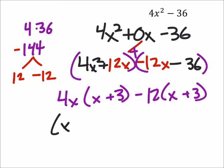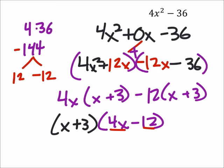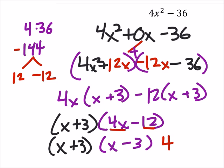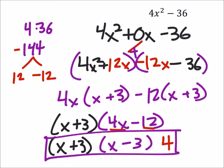So we end up with x plus 3 times 4x minus 12, but we can't forget to factor out a 4 from these two. Then I'm left with x minus 3, and this would be the final answer.